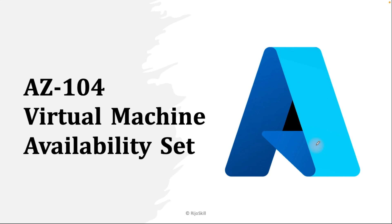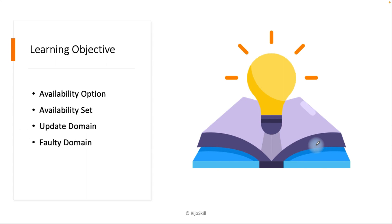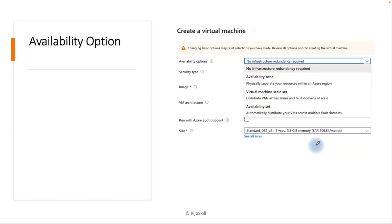Today I plan to cover the topic of virtual machine availability. It's a part of AZ-104. The learning objective today covers availability options — what the availability option is in the Azure portal — and availability set, update domain, and fault domain.